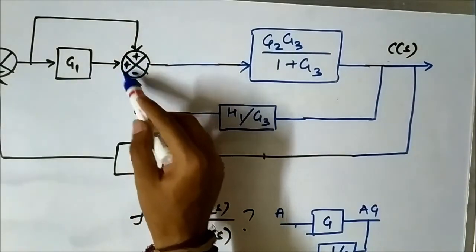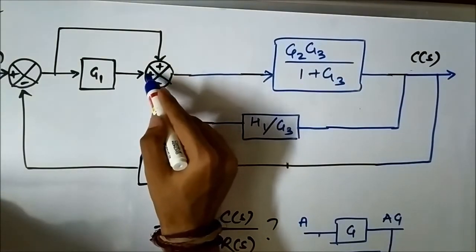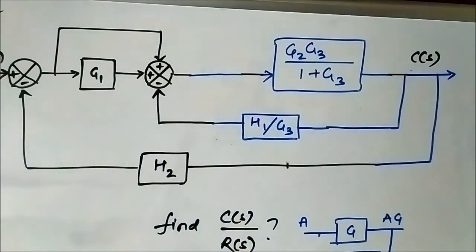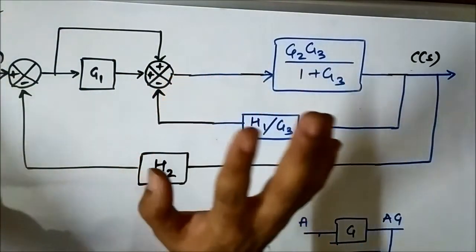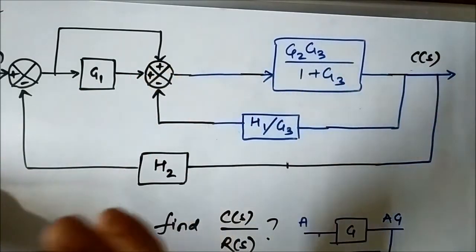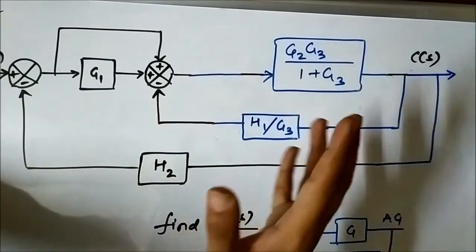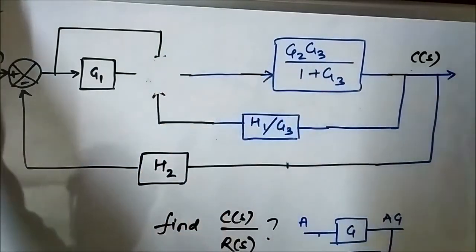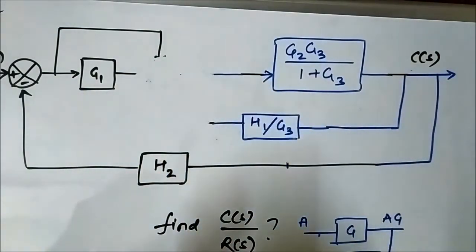Here the summing point has three inputs: plus, plus, and minus. We will have to split this summer into two parts. I have already discussed the splitting of a summer and the rules of basic block diagram reduction in previous videos, so I will skip that explanation and directly split the summer.